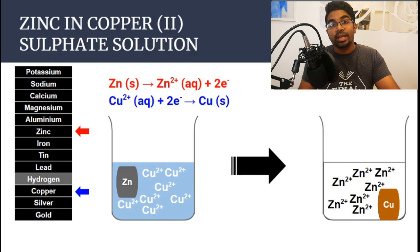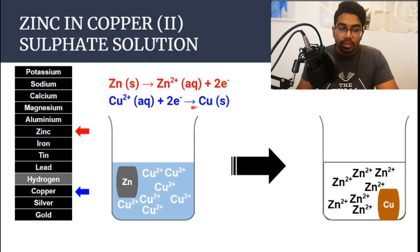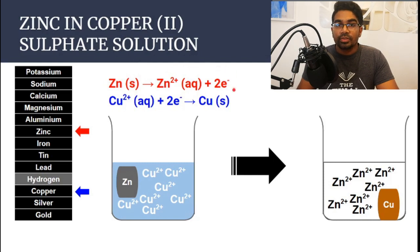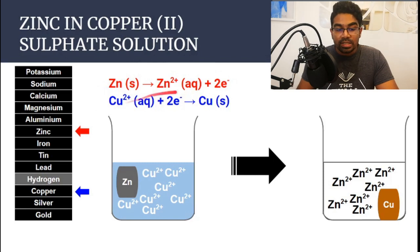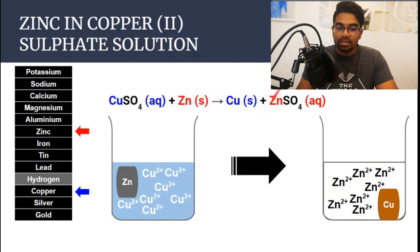Zinc has a higher tendency to donate electrons compared to copper. That is why between the two, zinc is the one that donates the electrons, which are transferred to the copper 2+ ions, and copper is displaced out as copper metal. The full equation is: CuSO₄ + Zn(s) → Cu(s) + ZnSO₄.